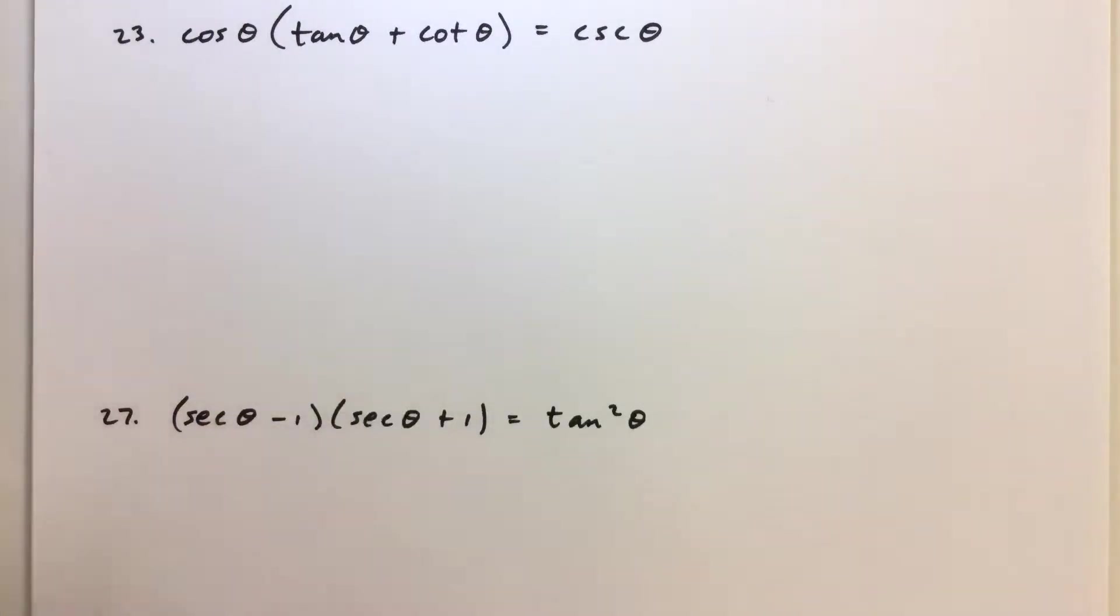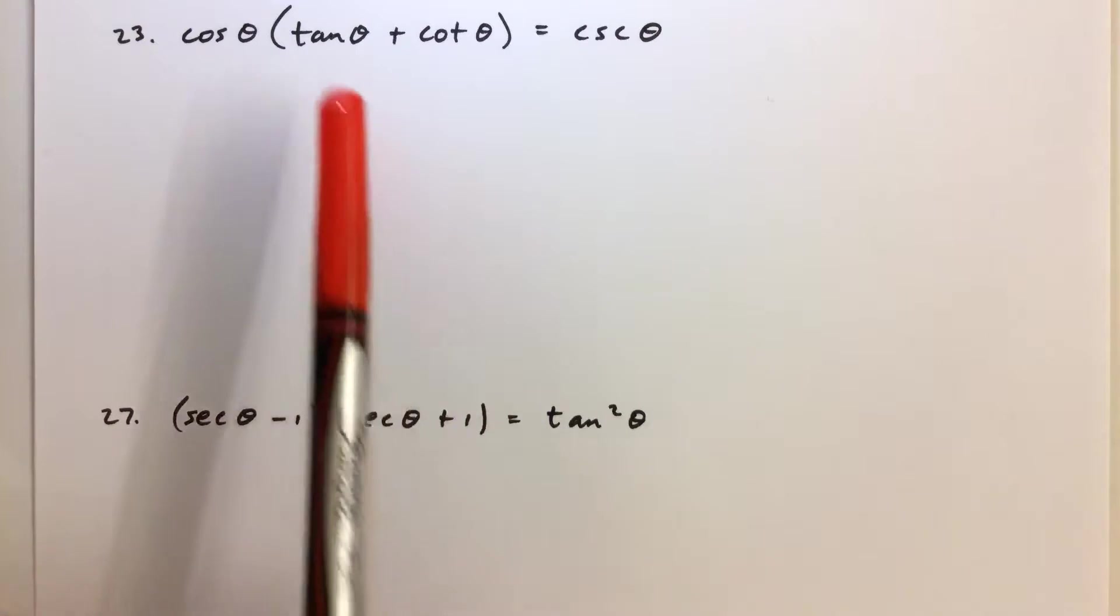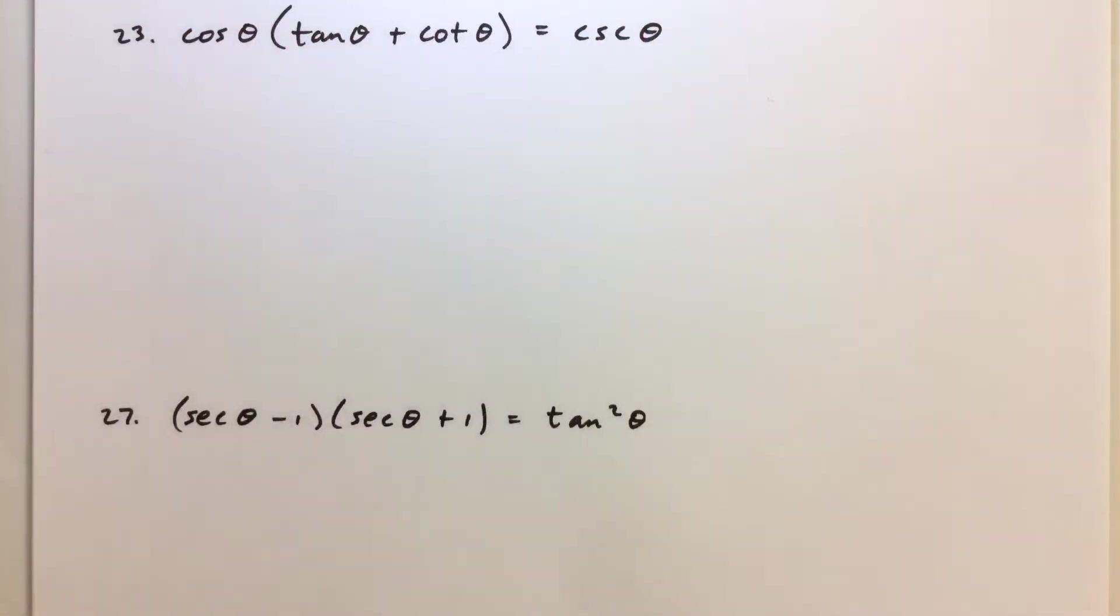For this problem, number 23, and the rest of the problems in this series of videos, all we're trying to do is establish the identities, meaning that we want to prove that the current statement is true by simplifying one side to make it look like the other.